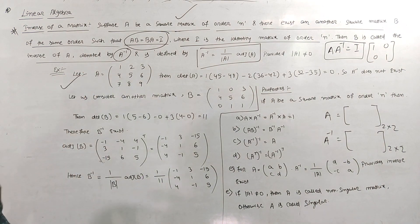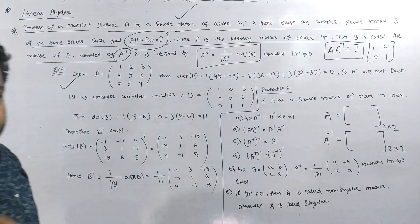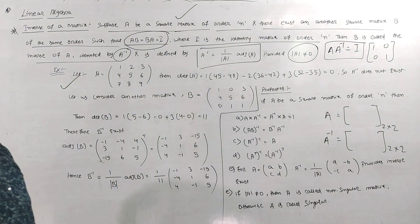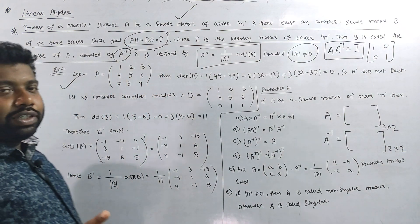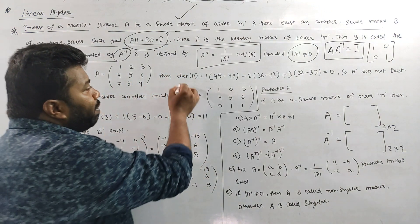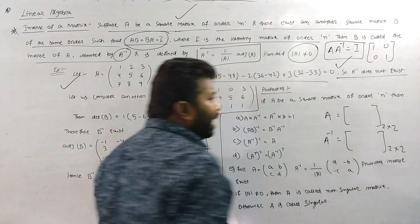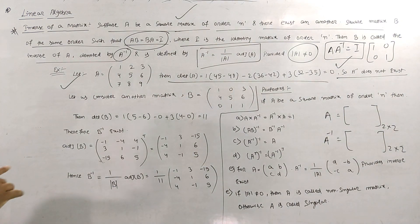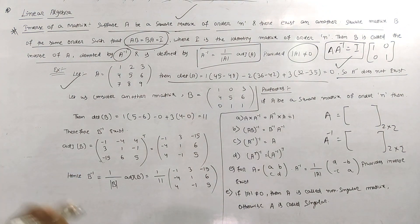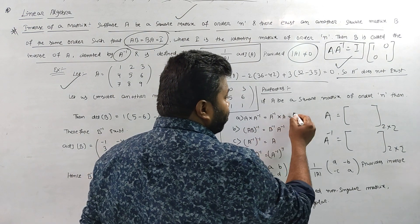If mod A is equal to zero, then A inverse does not exist. If A inverse equals A, then A equals zero. If mod A equals zero, then A inverse does not exist. You can see the properties: A into A inverse gives you I — and then A is equal to I, so the answer is I.